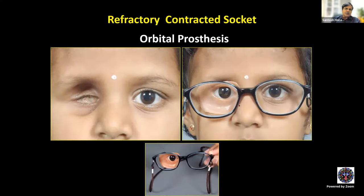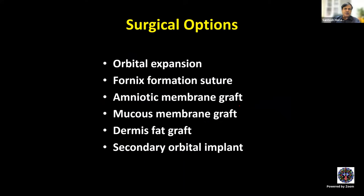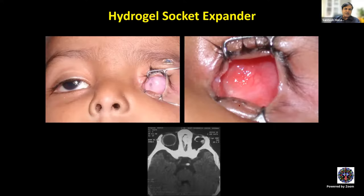Surgical options for contracted socket include orbital expansion, fornix formation suture, amniotic membrane graft, mucous membrane graft, dermis-fat graft, and secondary orbital implant.